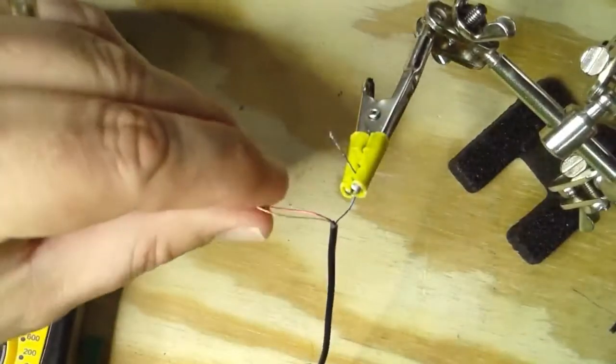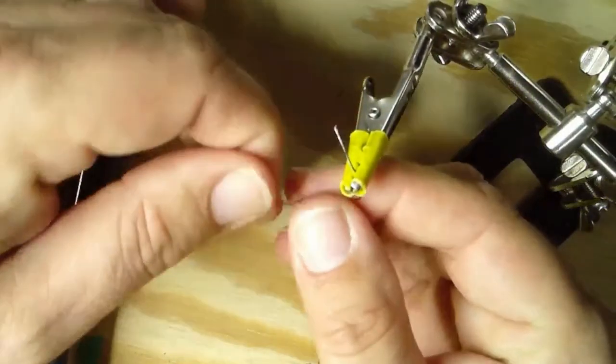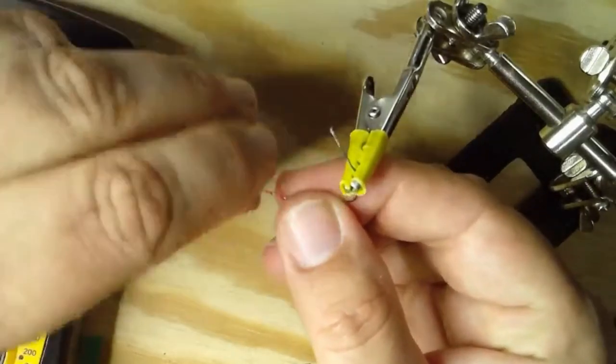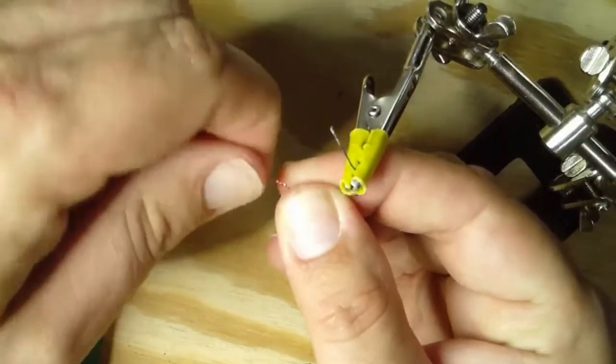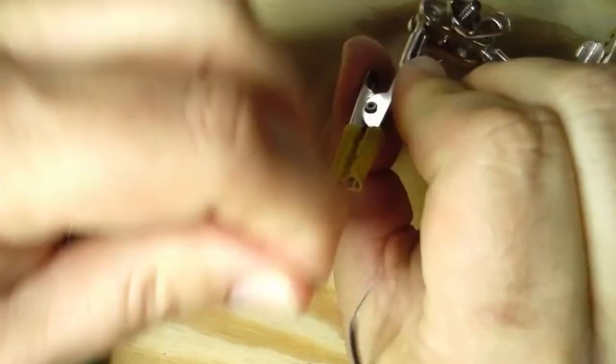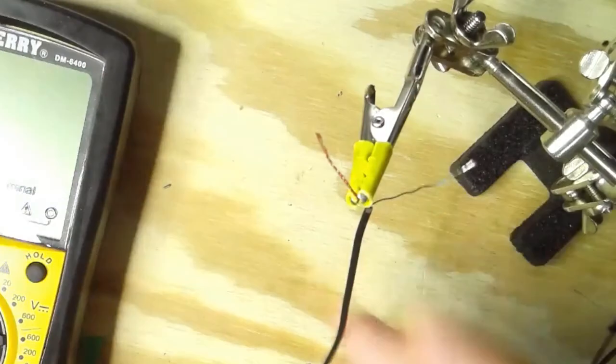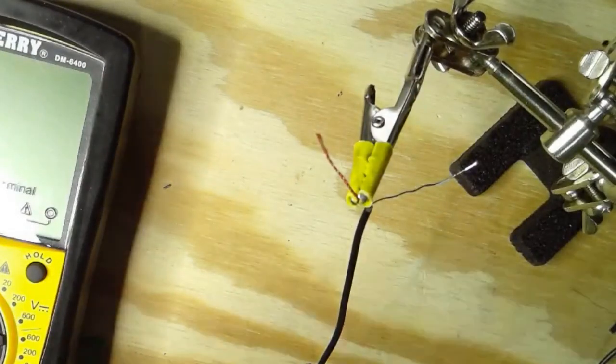In order to do that, we're going to take this red and the clear, it looks coppery but it's actually got a clear covering on it. And we are going to twist them together. And then we are going to solder them together, just like we did the blue one.